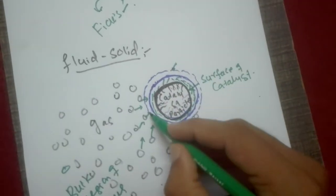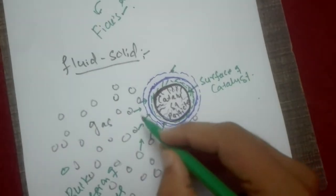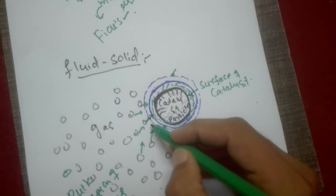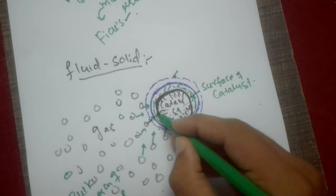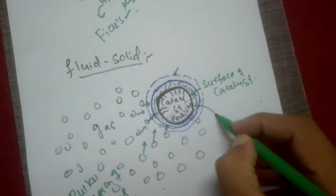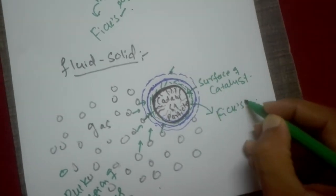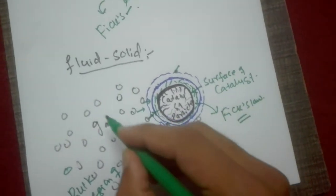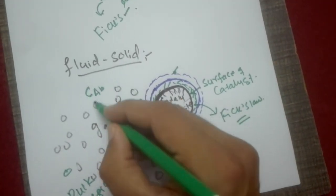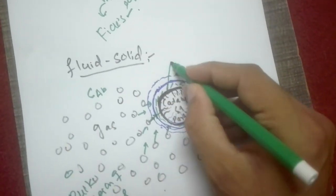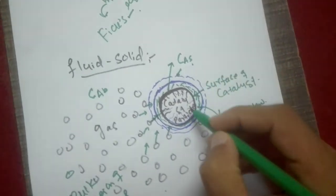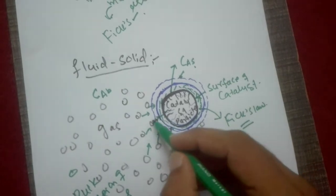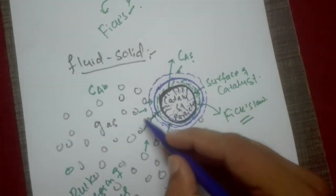The gas molecules come from the bulk phase, and when they reach near the surface of the catalyst, they diffuse through this stationary boundary layer. Here, Fick's law of molecular diffusion takes place. The molecules, due to the concentration gradient, diffuse to the catalyst surface. There is a concentration CAb of molecules of species A in the bulk, and CA is the concentration of A at the catalyst surface.